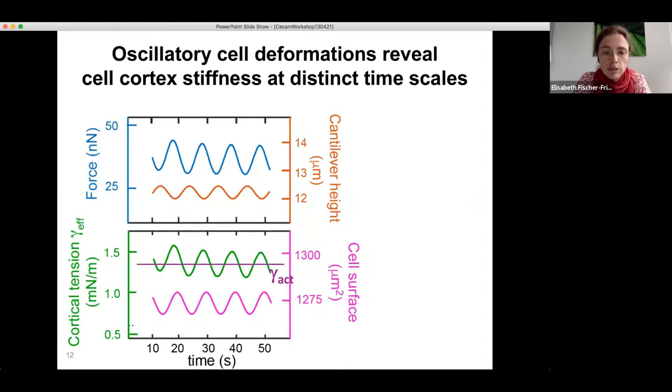So the time average of this cortical tension we actually associate to the active cortical tension generated by the motor proteins. So even in the absence of deformation there is tension, but the oscillations which are superimposed are deformation induced and thereby can tell us about the mechanical stiffness of the cortex. And essentially we have here something like a stress signal and a deformation signal pinging the cell surface area.